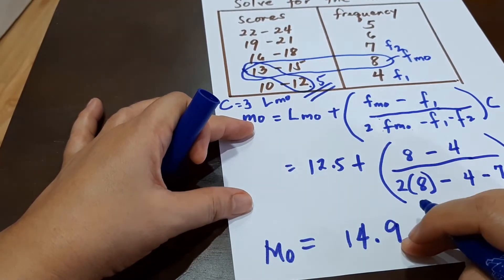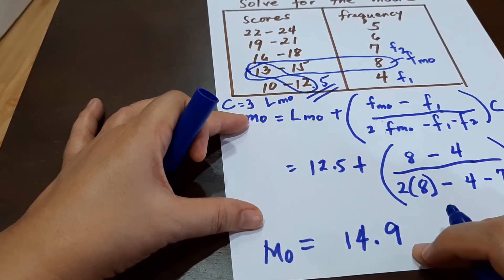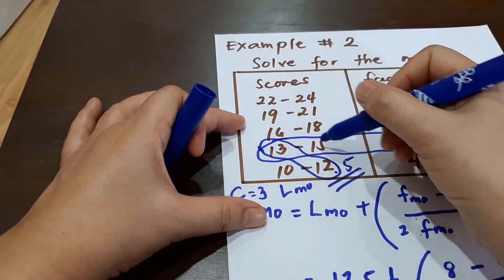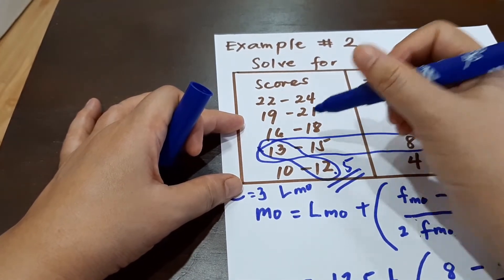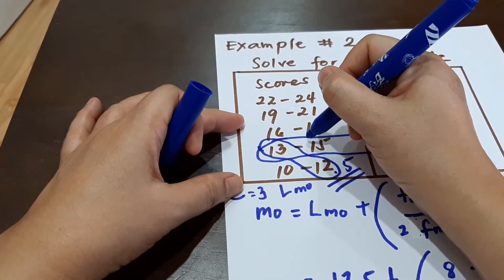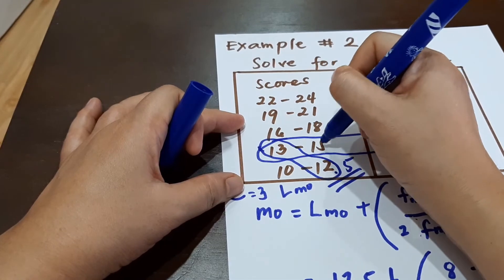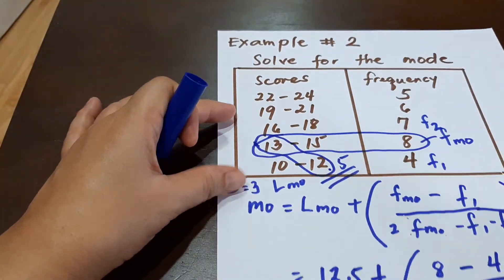So your mode is approximately 14.9, and it should really be here in your modal class 13 to 15. So 14.9 is somewhere very near your 15 score here.